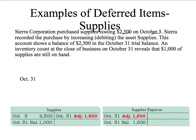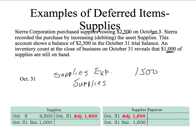The supplies are worth $2,500, but when we do an accounting of the inventory, we have only $1,000 left. Obviously we've used up $1,500, but that's not recorded in my records. So again, recognize the expense: debit supplies expense $1,500, and credit the asset supplies. We recognize the expense and reduce the asset. When we post that, the supplies account shows a $1,000 balance — exactly what we have left — and I have a supplies expense account debit of $1,500.